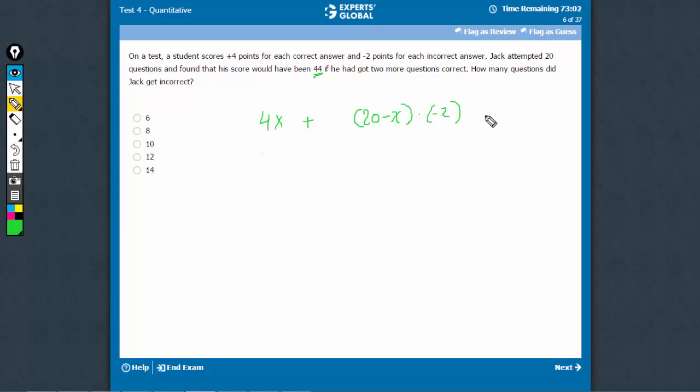So 4x and his score is 44 here. 4x minus 40 plus 2x is equal to 44. Solve it for x: 6x is equal to 84, x is equal to 14.